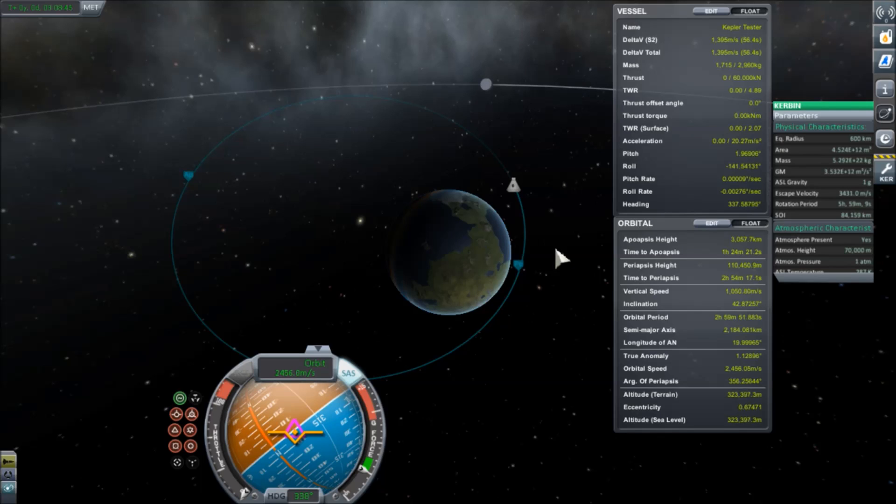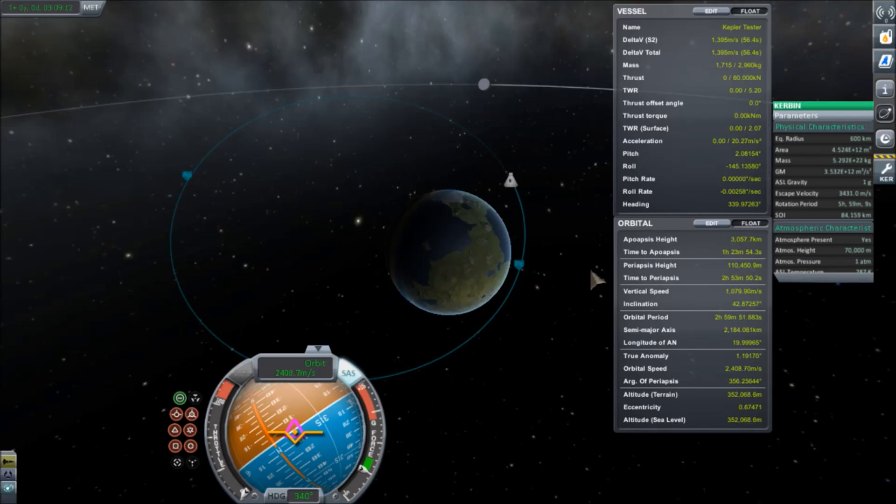So what about the periapsis? Well, remember, for that, it was basically the same equation, except we just changed the plus to a minus. So once we get that, we get 710.46 kilometers. So again, we subtract out the 600, and we have 110 kilometers, thereabouts. So yeah, looks like the equations hold.